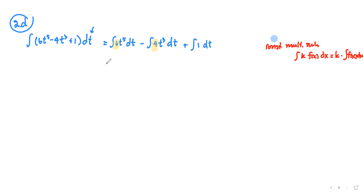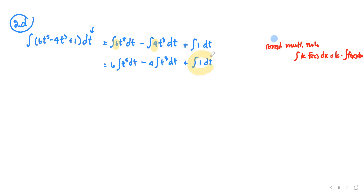We pull the 6 out of the first integral so the integrand becomes a clean power form. The last term is a constant term, so I'll note here: the constant multiple rule and the constant rule are not the same thing.